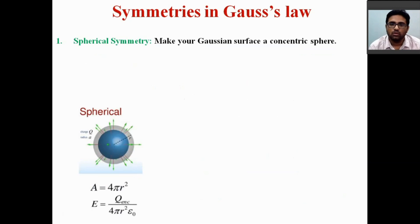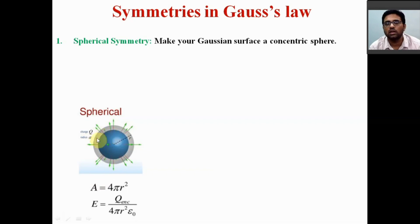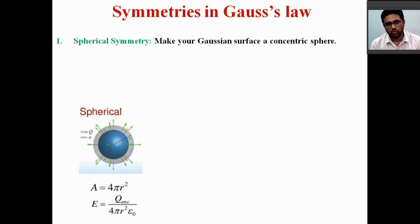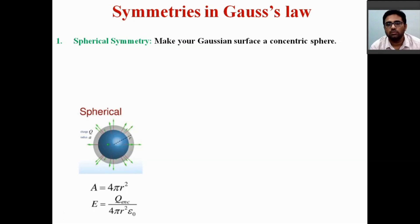Let us discuss different symmetries and how Gaussian surfaces are constructed. In spherical symmetry, we have to make our Gaussian surface concentric spheres. The charge distribution is spherically symmetric, so we consider a spherically symmetric Gaussian surface. In that case, E is constant at a particular distance, so the electric field multiplied by the surface area 4 pi r squared equals Q enclosed by epsilon naught. From there, we find the electric field is Q enclosed divided by 4 pi epsilon naught r squared at the outside point of the charge distribution.